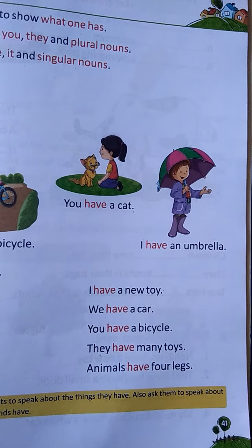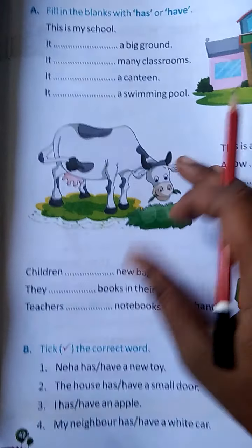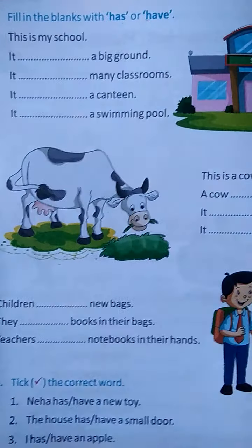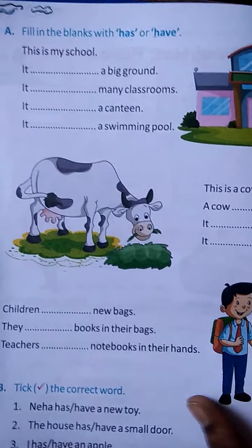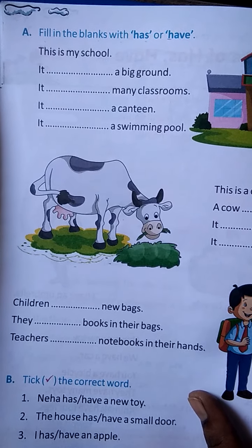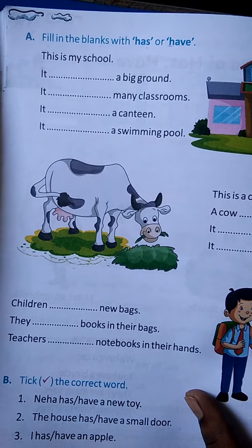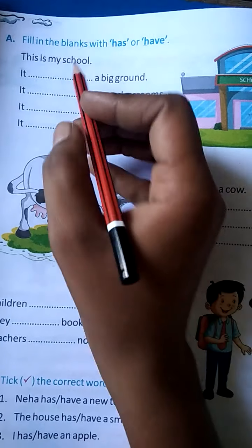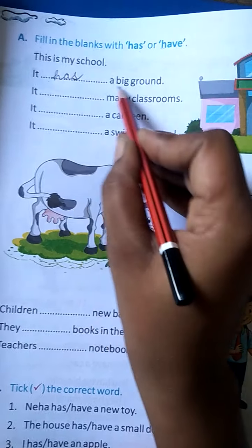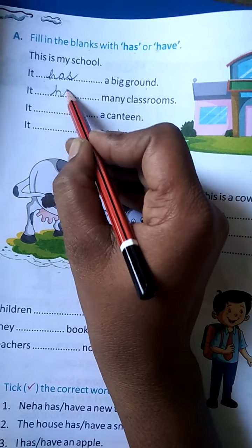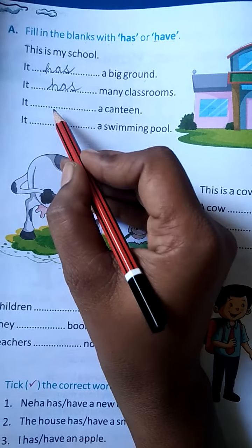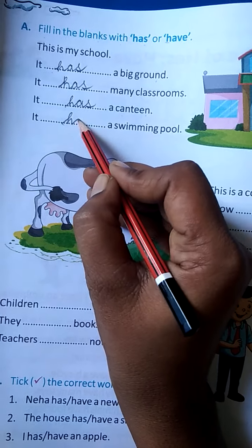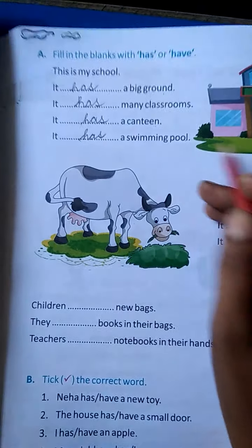Now turn the page. See बेटा, on page number 42, here exercise is given to you — fill in the blanks with has or have. Has or have use करके आपको fill in the blanks करना है. This is my school — यह मेरा school है. It is singular, so: it has a big ground, it has many classrooms, it has a canteen, it has a swimming pool.